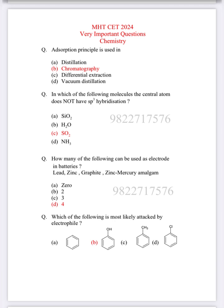How many of the following can be used as electrode in batteries? Lead, Zinc, Graphite, Zinc-Mercury Amalgam. All of these are used as electrodes in batteries, so the answer is 4.